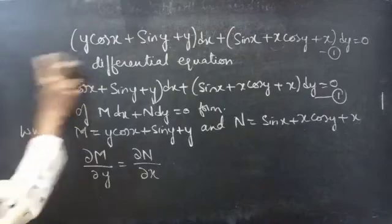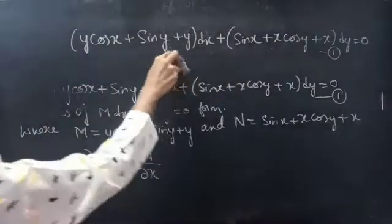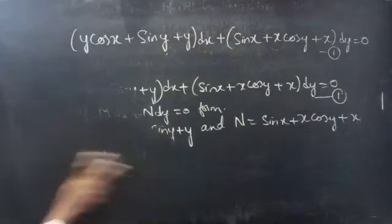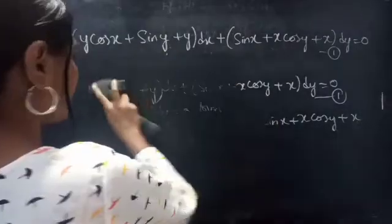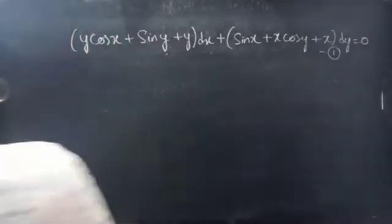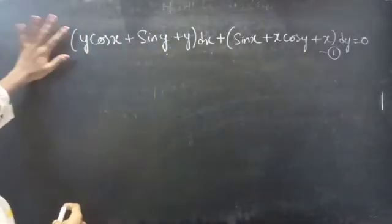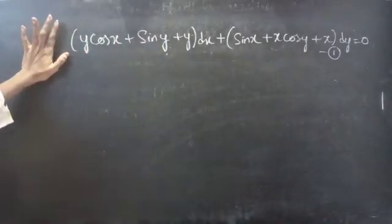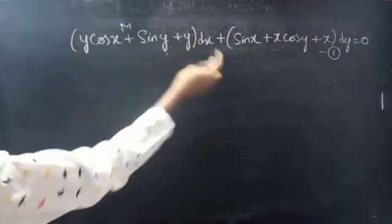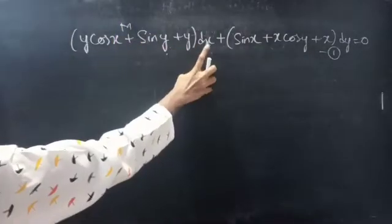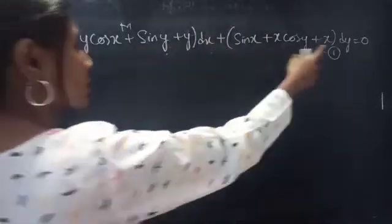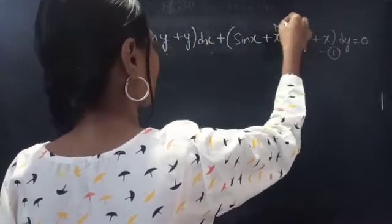By finding partial derivatives of M with respect to y and N with respect to x, we can determine whether the given equation is exact or not. The terms containing dx give us M, and the terms containing dy give us N.